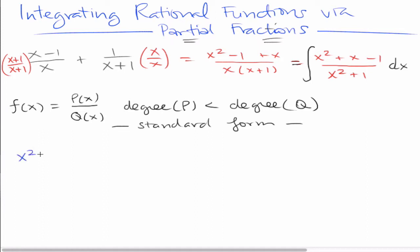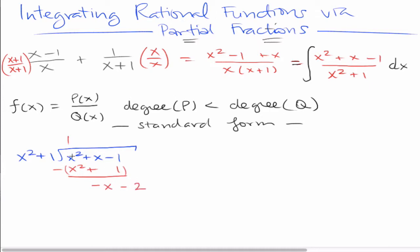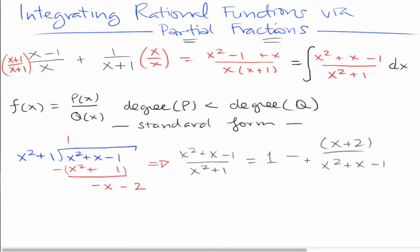For example, we would simply take x squared plus 1 and divide it into x squared plus x minus 1. x squared goes into x squared one time, and then we get x squared plus 1. When we subtract terms, these two terms cancel, and we get negative x minus 2, because when we distribute the negative, this cancels, and negative 1 and negative 1 give us negative 2. So x squared plus x minus 1 over x squared plus 1 equals just the number 1 minus x plus 2 over x squared plus x minus 1. This is the standard form.